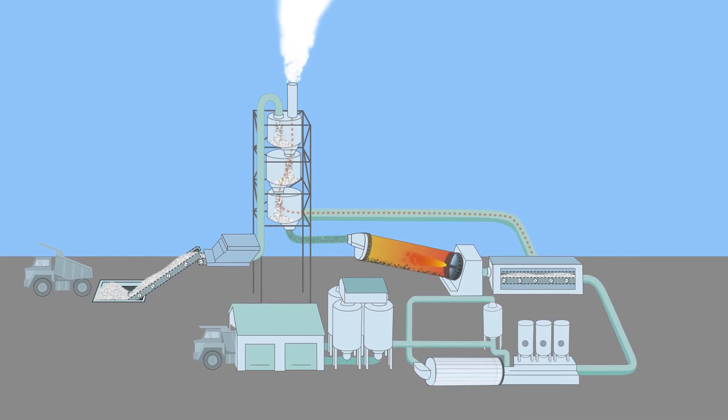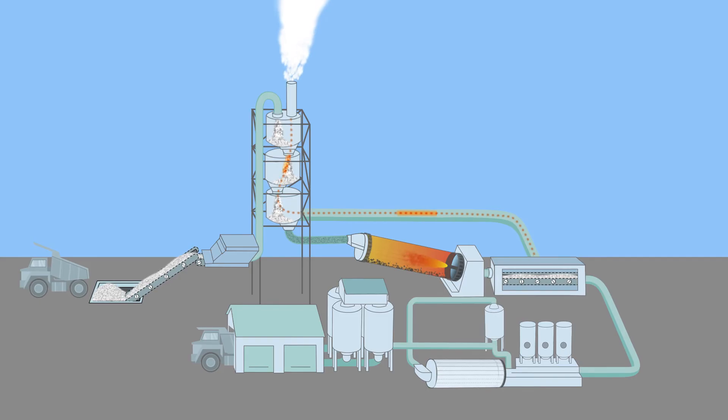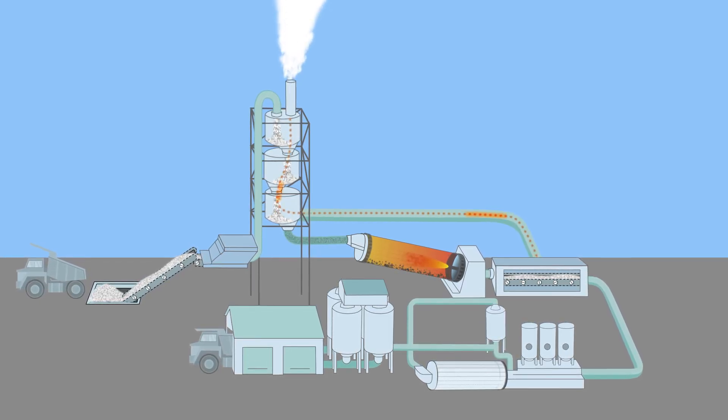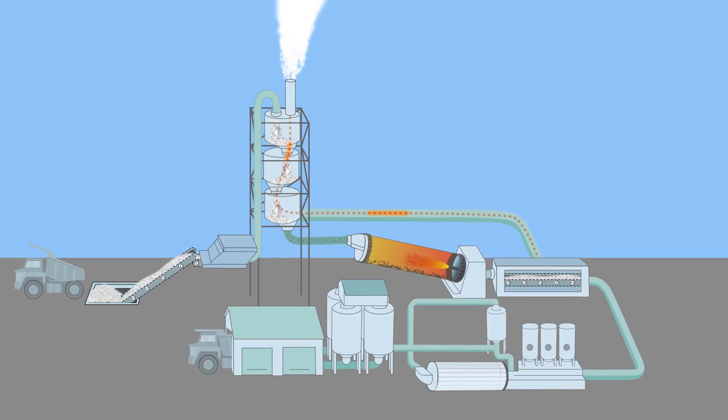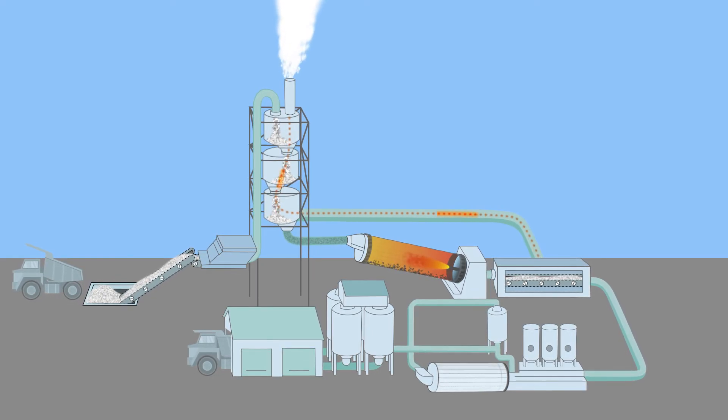An important aspect of quenching in modern cement plants is that the heat released in this operation is recycled by sending it to the precalciner. This greatly contributes to making modern cement plants thermally highly efficient.